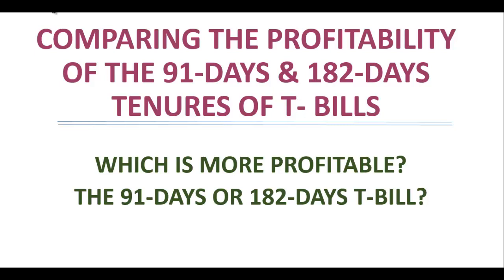In previous videos, we looked at the fact that there are different tenures of investment for Treasury bills: the 91 days, the 182 days, and the 364 days. The tenure is simply the duration for the maturity of your Treasury bills. The three tenures exist, but the commonest ones are the 91 days and the 182 days. If someone is entering into T-bill investment and wants to choose between the tenures, what should inform that choice?